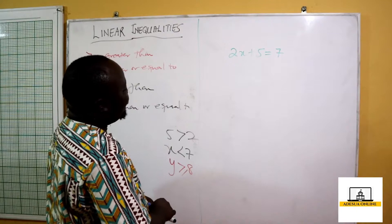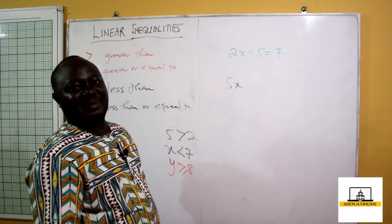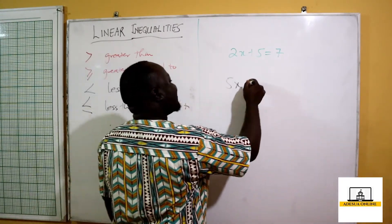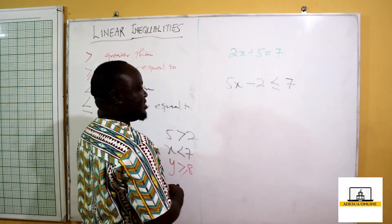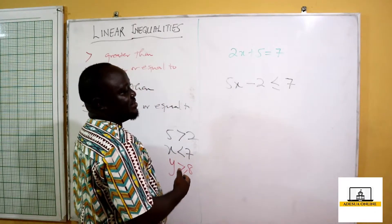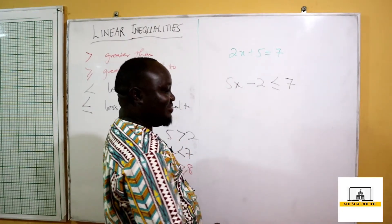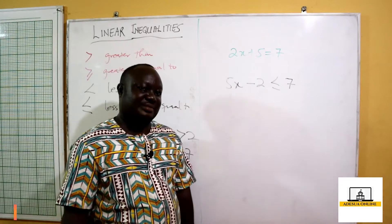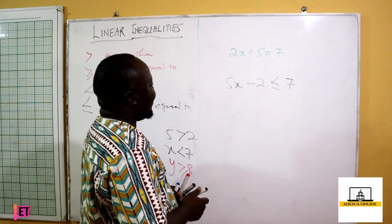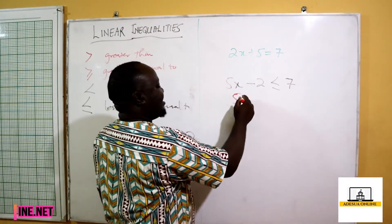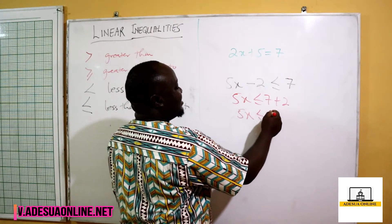Now, assuming you have been asked to find 5x minus 2 is less than 7, you have been asked to solve for this, and we present our solution on the number line. So we are going to have 5x is less than 7 plus 2, so we have 5x is less than 9.